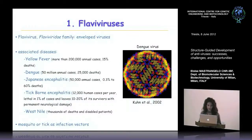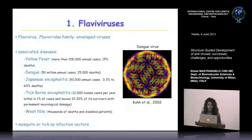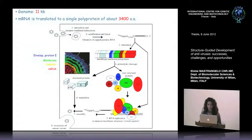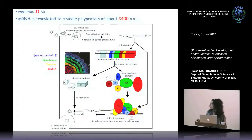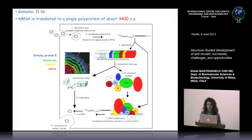Tick-borne encephalitis causes 12,000 human cases per year and is lethal in only 1% of cases, but unfortunately leaves 10-20% of survivors with permanent neurological damage. West Nile virus causes thousands of deaths and disabled patients. The infection vectors are mosquitoes or ticks, which is why infection spreads rapidly. The genome spans about 11 kilobases and is translated to a single polyprotein, cleaved into three structural proteins and seven non-structural proteins forming the replication complex.